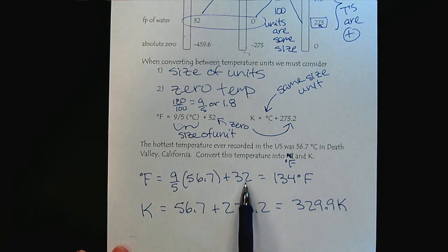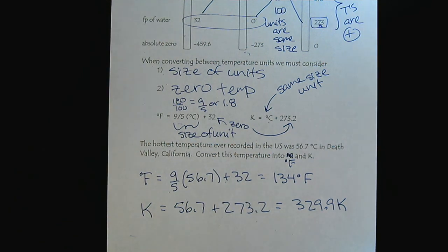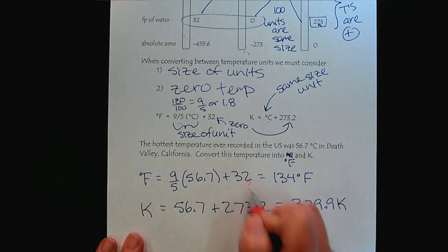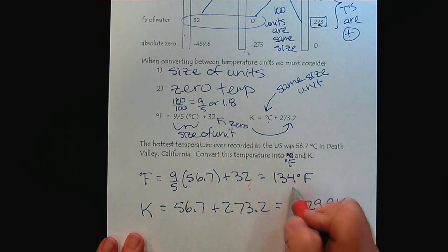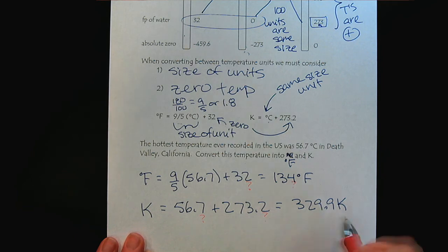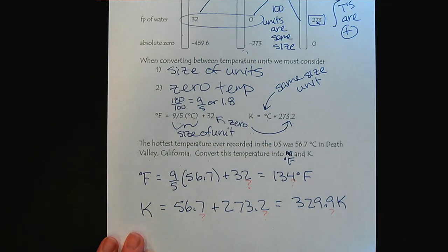In this case, with the 32 here in the ones, we'll leave the result there. And here the uncertainties are in the tenths, so we can leave our result in the tenths place.